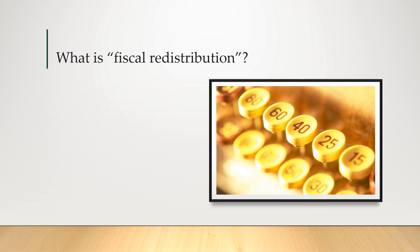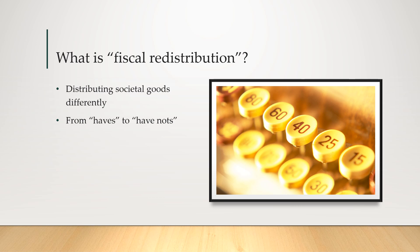So what is fiscal redistribution? At its core, fiscal redistribution is distributing societal goods differently than we are right now. The redistribution part means distributing from haves to have-nots — most definitions talk about redistributing from those who have more to those who have less. The concept includes both a tax and a transfer: taking in revenue from taxes and transferring that revenue to other folks in society.